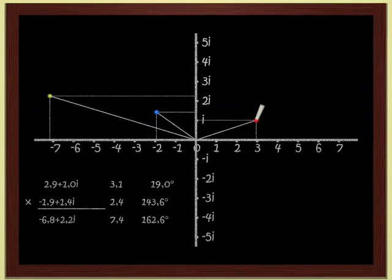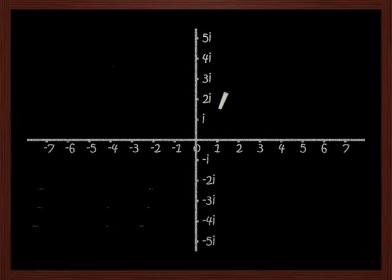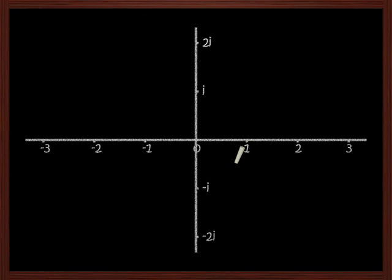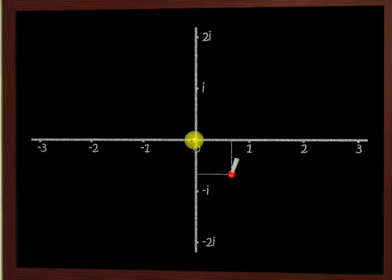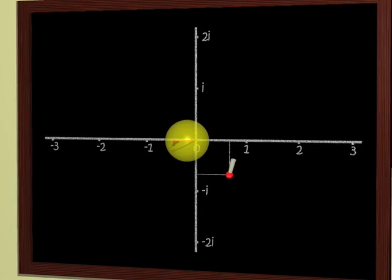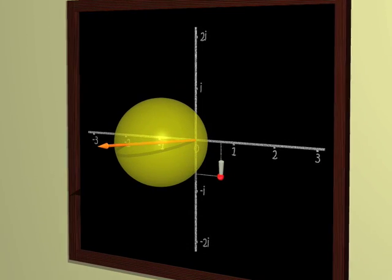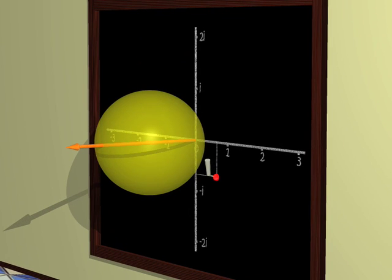Let's finish up our first encounter with complex numbers with the stereographic projection. Consider a sphere tangent to the board at the origin. Using stereographic projection, to each point on the board, that is, to each complex number, corresponds a point on the sphere.